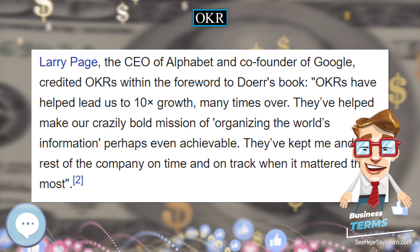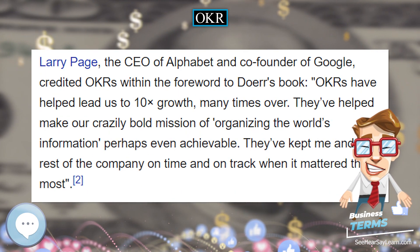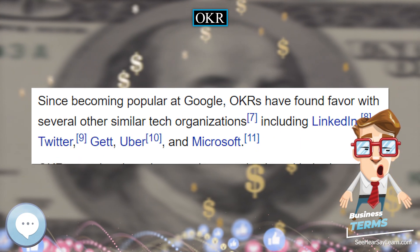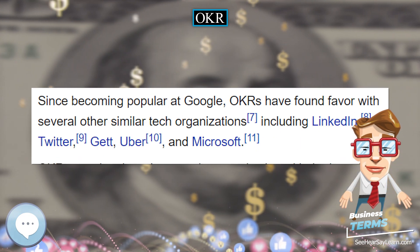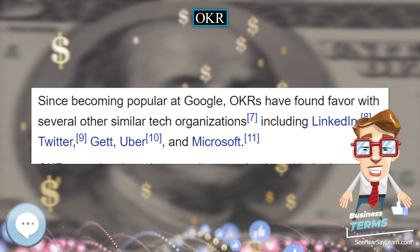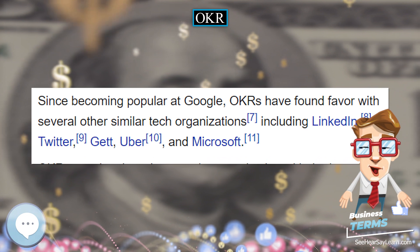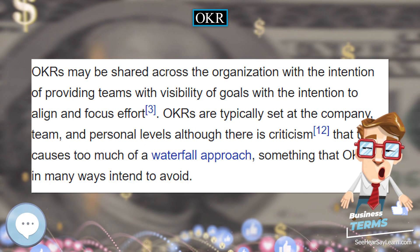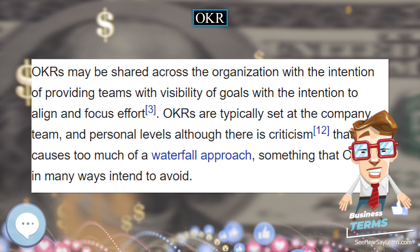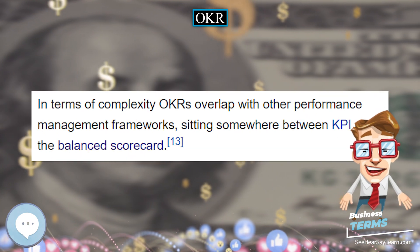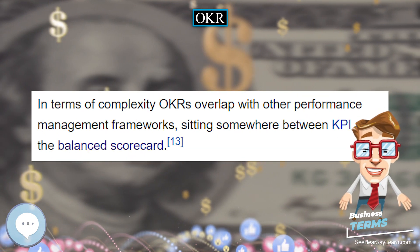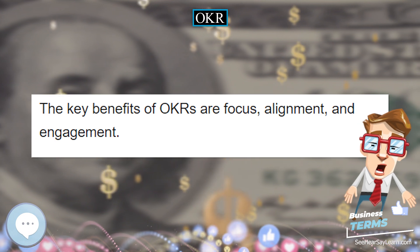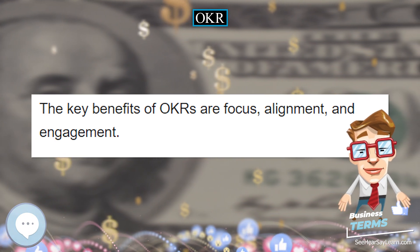Larry Page, the CEO of Alphabet and co-founder of Google, credited OKRs within the foreword to Doerr's book: "OKRs have helped lead us to 10 times growth, many times over. They've helped make our crazily bold mission of organizing the world's information perhaps even achievable. They've kept me and the rest of the company on time and on track when it mattered the most."